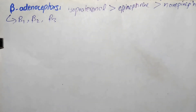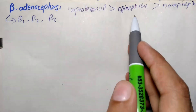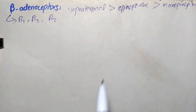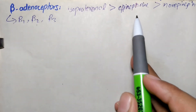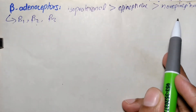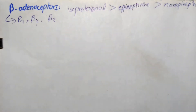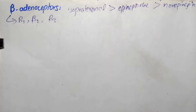Beta 1 receptors have approximately equal affinity for epinephrine and norepinephrine, whereas beta 2 receptors have greater affinity for epinephrine than norepinephrine. Thus tissues with a predominance of beta 2 receptors are particularly responsive to the effects of circulating epinephrine released by the adrenal medulla.